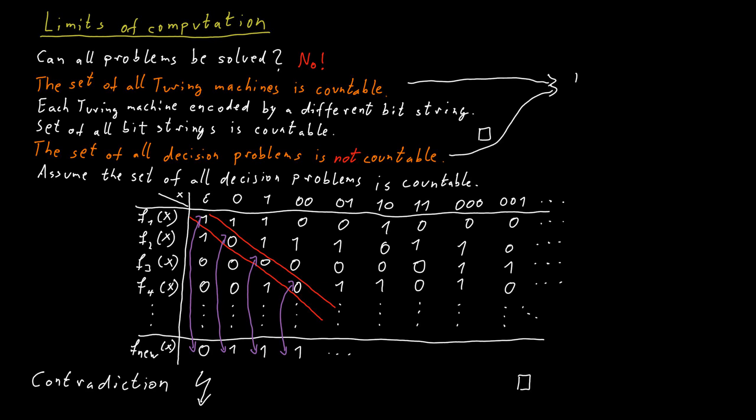Because the set of all decision problems is not countable, but the set of all Turing machines is, and because each Turing machine solves at most one decision problem, in fact, some Turing machines don't solve any problem because there's some input for which they don't halt, there must be some decision problem that is not solved by any Turing machine, simply because there are many more problems than there are Turing machines. In fact, it's even worse than that, because not only do there exist decision problems which are not solvable by a Turing machine, but almost all decision problems are not solvable by a Turing machine, because the set of all decision problems, in some sense, is so much bigger than the set of Turing machines.